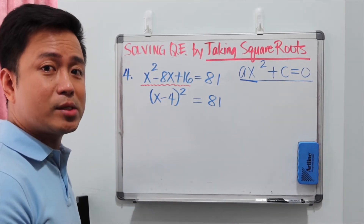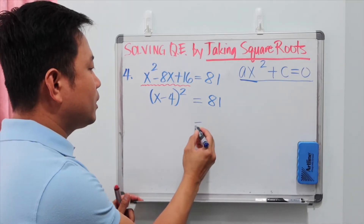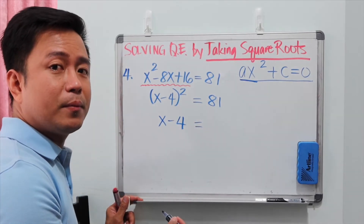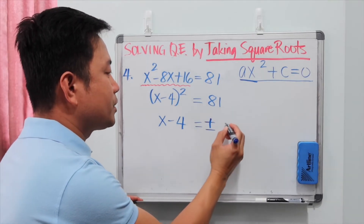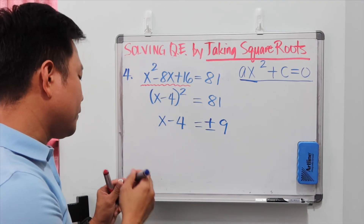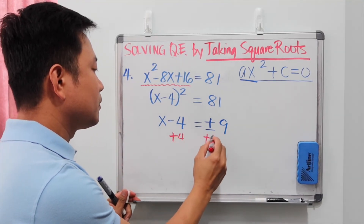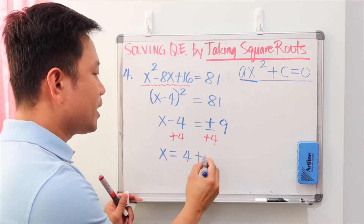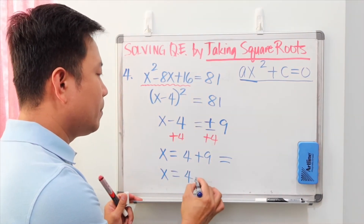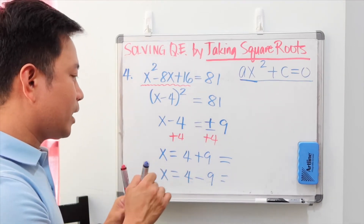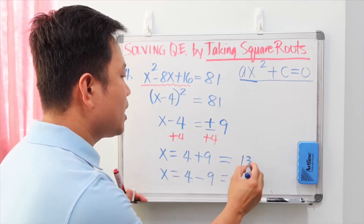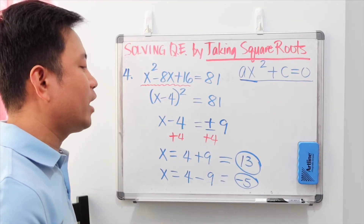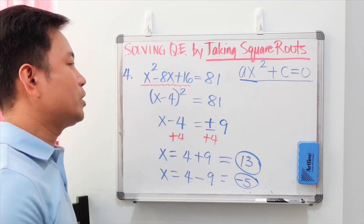Now we take the square root of both sides: x minus 4 equals plus or minus 9, since the square root of 81 is 9. Adding 4 to both sides, x equals 4 plus 9 or x equals 4 minus 9, giving the two values 13 and negative 5. You can verify these answers by substituting them back into the original quadratic equation.